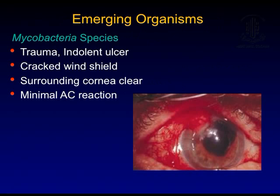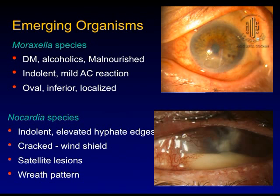Mycobacterial ulcers are becoming more important now because of refractive surgery. They have a cracked windshield appearance with a clear surrounding cornea and minimal AC reaction. Moraxella generally occurs in diabetics, alcoholics, and malnourished patients — oval ulcers which are inferior and localized. Nocardia, on the other hand, has a cracked windshield appearance with satellite lesions and a wreath-like pattern.